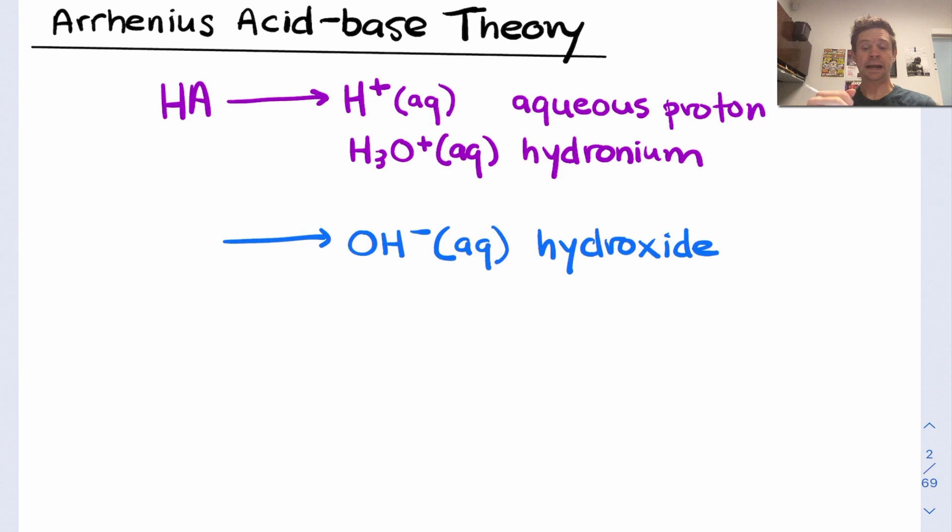Many Arrhenius bases actually contain the hydroxide anion built in. We have some metal cation and some number of hydroxide anions in the formula. When that compound is dissolved and dissociates, hydroxide ion is surrendered.